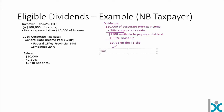That $9,798 gives us the basis for determining many other outcomes. We can look at the actual tax payable — that's the amount that will show up on your tax return because it showed up on the T5 slip. So tax payable: $9,798 times 42.52% gives us $4,166 of tax to pay.